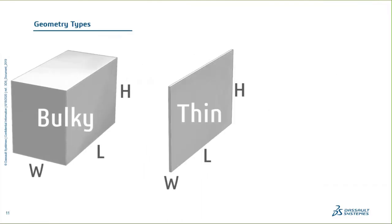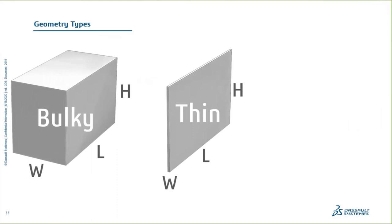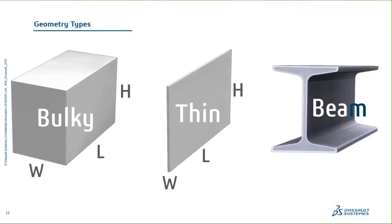From there we have thin geometry — sheet metal, panes of glass, cardboard — very thin cross-section but large area components. The height and length are very similar, say in feet, while the width or thickness is in inches — maybe a quarter inch thick by three feet by four feet. And then there is beam geometry: anything created using weldment functionality or a simple extrude — any geometry with a constant cross-section over a given length.